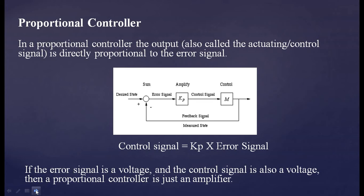The first is the proportional controller. In a proportional controller, the output — also called the actuating or control signal — is directly proportional to the error signal. The error signal is the difference between the actual output and the desired output. The control signal is equal to Kp multiplied by the error signal, where Kp is the proportionality constant. As the name suggests, the control signal is always proportional to the error signal, so Kp converts the proportionality to equality.